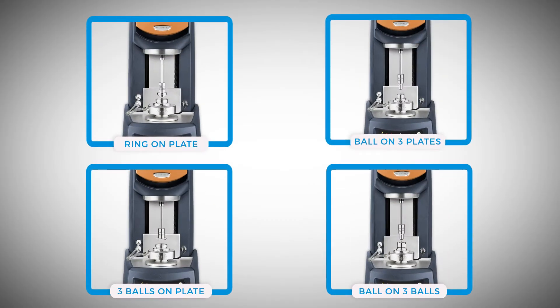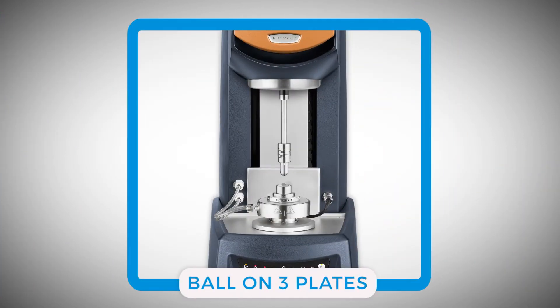TA Instruments' Discovery Hybrid Rheometer is equipped with four different types of tribo-rheometry accessories. Among them, this ball-on-three-plates geometry provides a capability of testing the coefficient of friction on a solid surface with some low viscosity media in between.